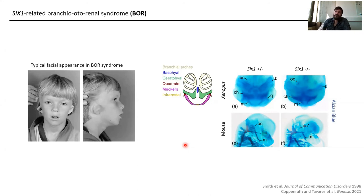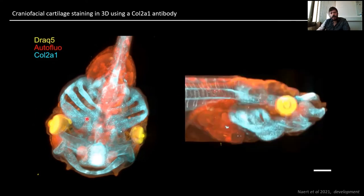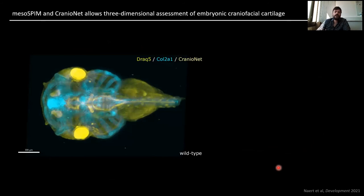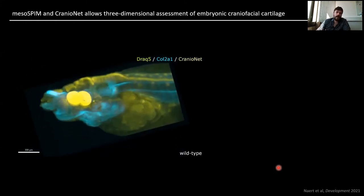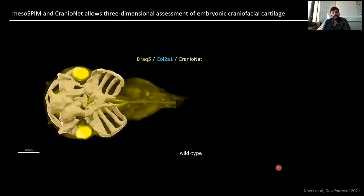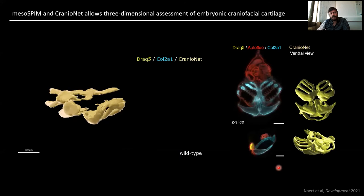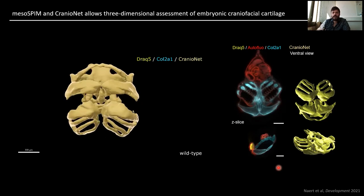We wondered: can we use the mesoSPIM to go beyond these 2D stereomicroscopy approaches? We optimized a collagen 2A1 stain together with a DRAQ5 far-red nuclear stain, getting images now in three-dimensional almost fully isotropic view. We then trained a neural network to segment out craniofacial cartilage from these large data sets, allowing us to look at segmentations and get quantitative feature extraction data.